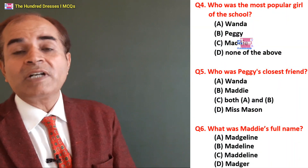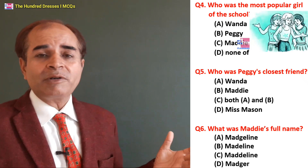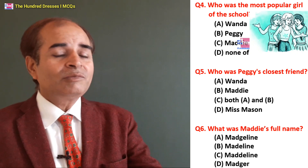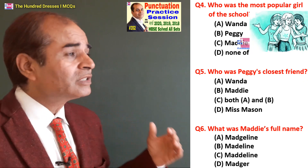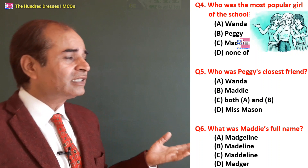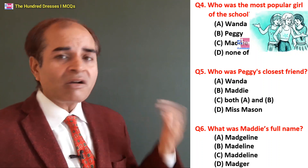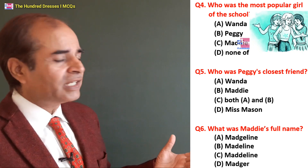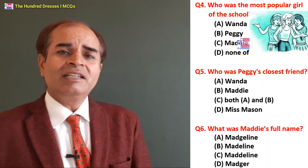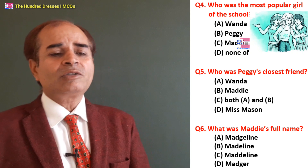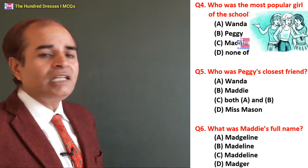Fourth question: Who was the most popular girl of the school? Wanda? Peggy? Maddy? None of the above? It was Peggy — Peggy was the most popular girl, as seen in the story. Fifth question: Who was Peggy's closest friend? A girl always stayed with Peggy but remained a mute spectator when Peggy mocked Wanda. Maddy is the right answer — Maddy was Peggy's closest friend.